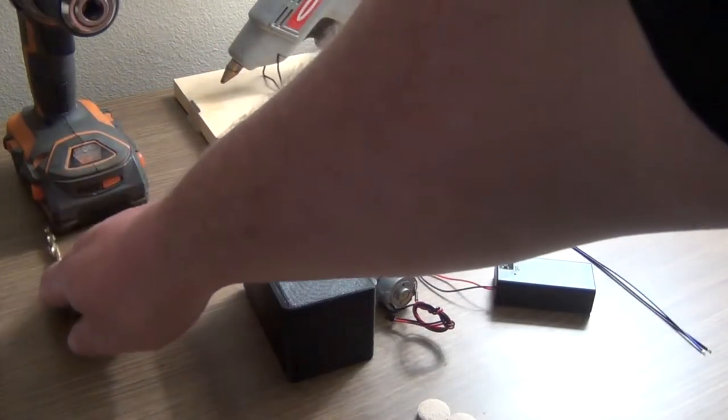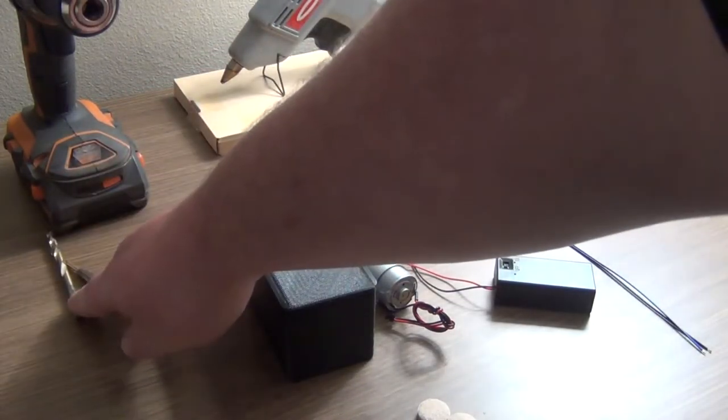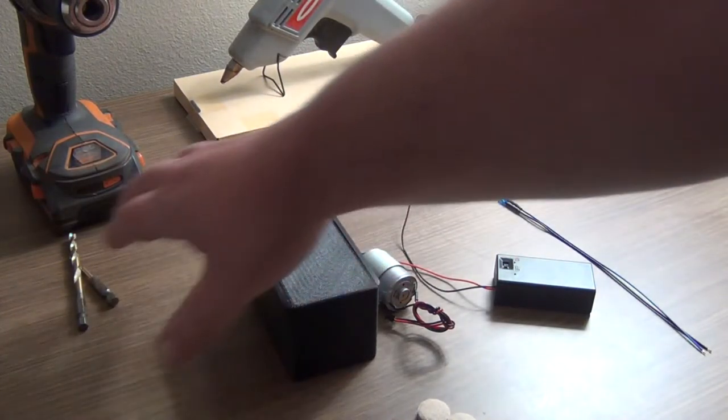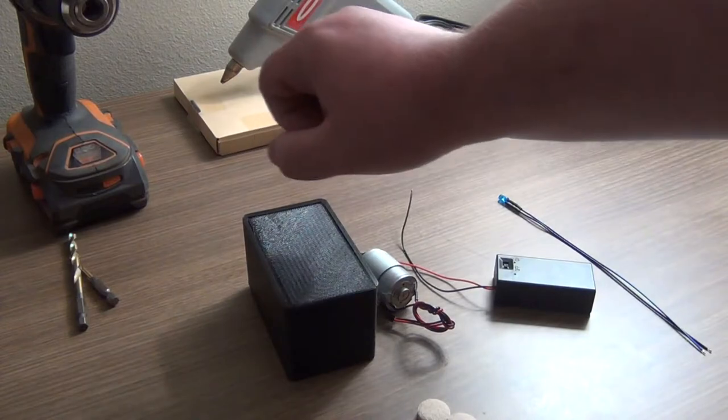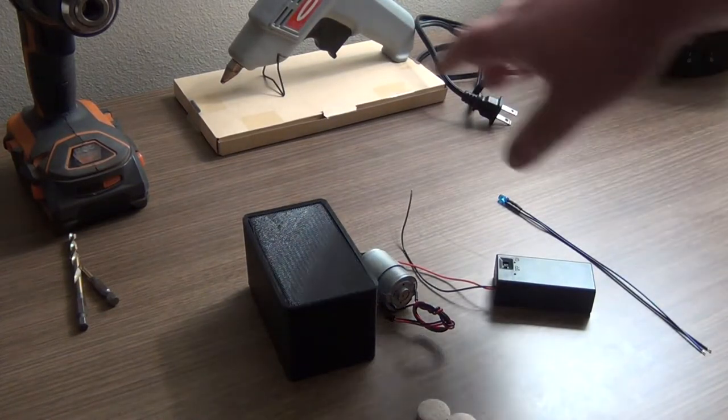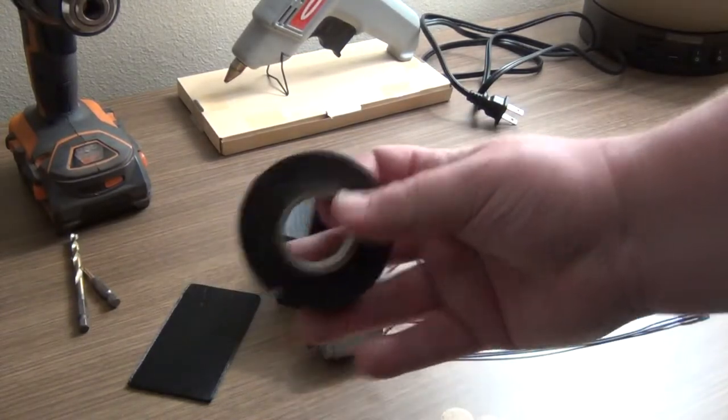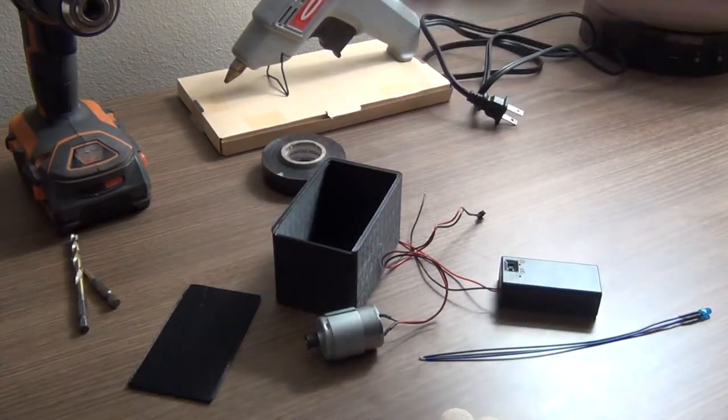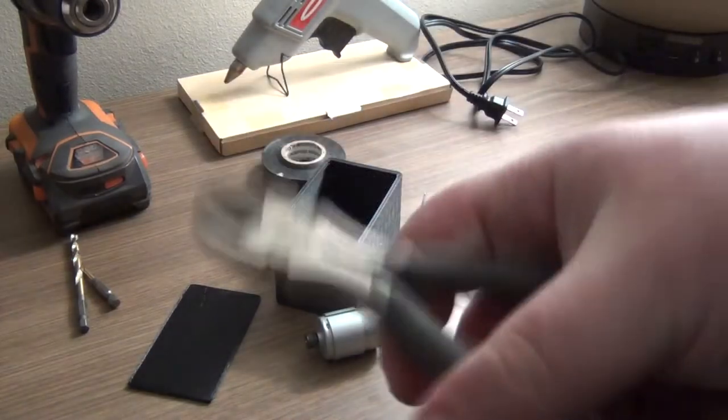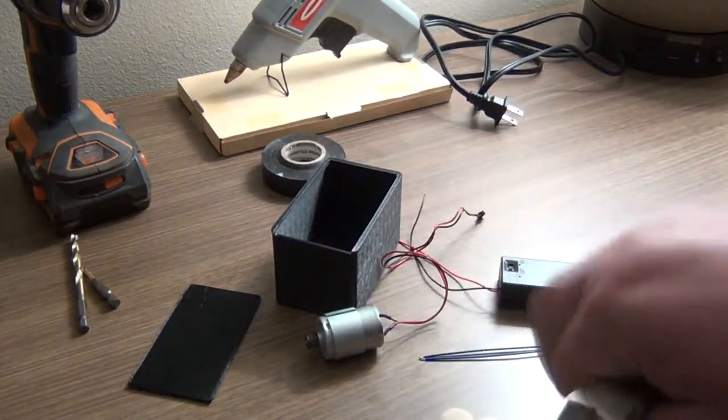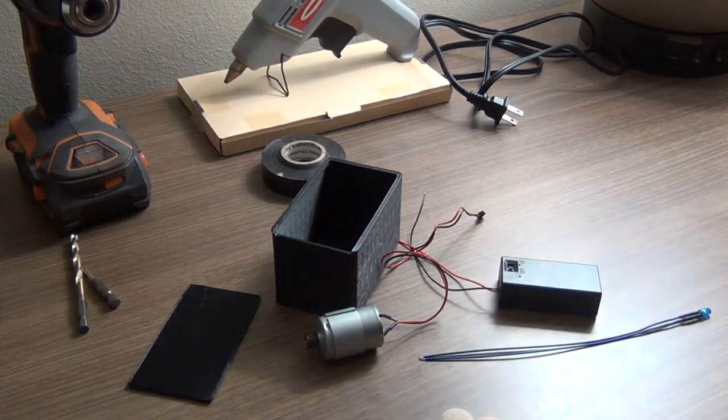For tools, you'll need a drill and two drill bits to run your wires through your box and a hole for your LED light, and a hot glue gun. You'll also need some electrical tape and wire strippers, pliers, scissors, whatever you're more comfortable with to strip the wires.